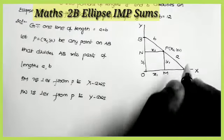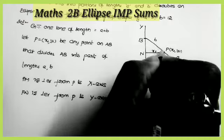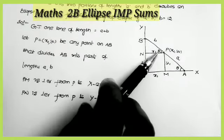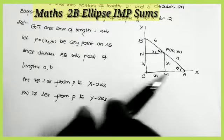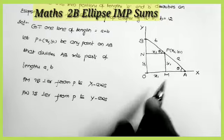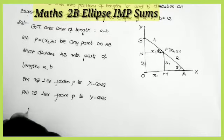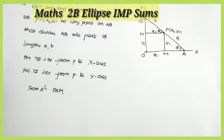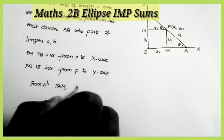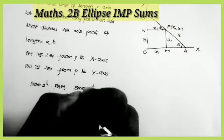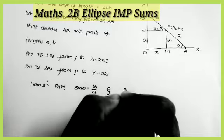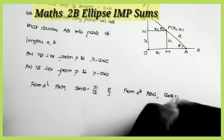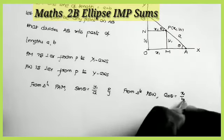In the diagram we have two triangles. Suppose this angle is equal to theta; then this angle is also equal to theta, since these two triangles are congruent — the two parallel sides with a transversal make the angles equal. From triangle PAM, sin θ = opposite over hypotenuse = y₁ / a. From triangle PBN, cos θ = adjacent over hypotenuse = x₁ / b.